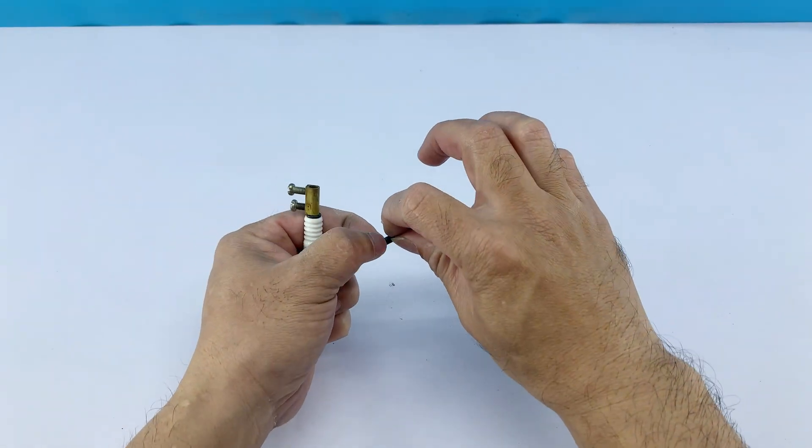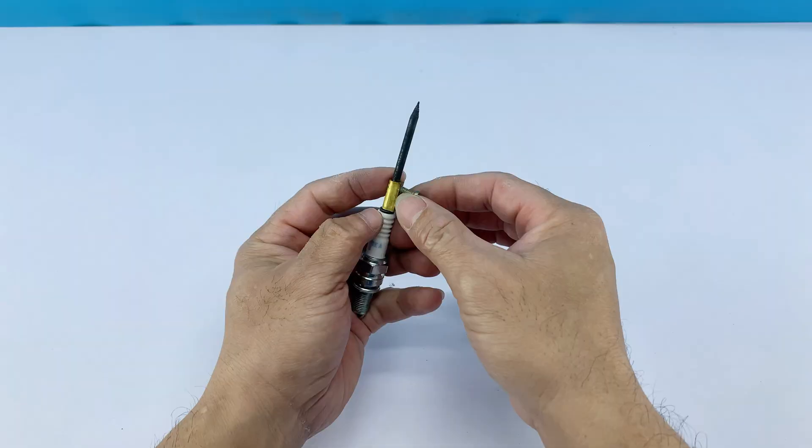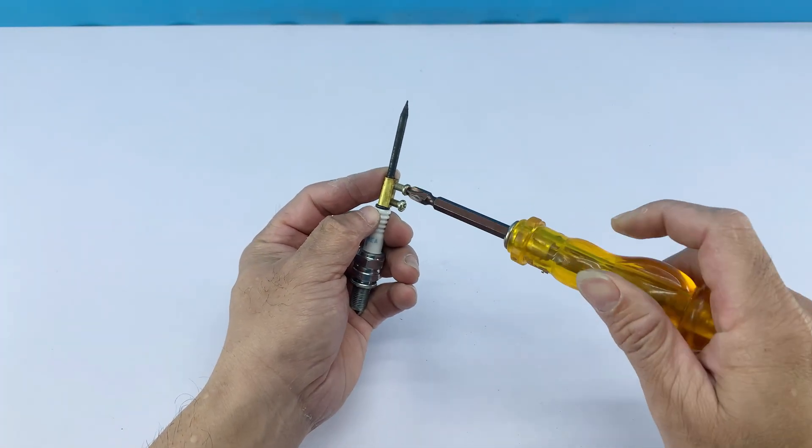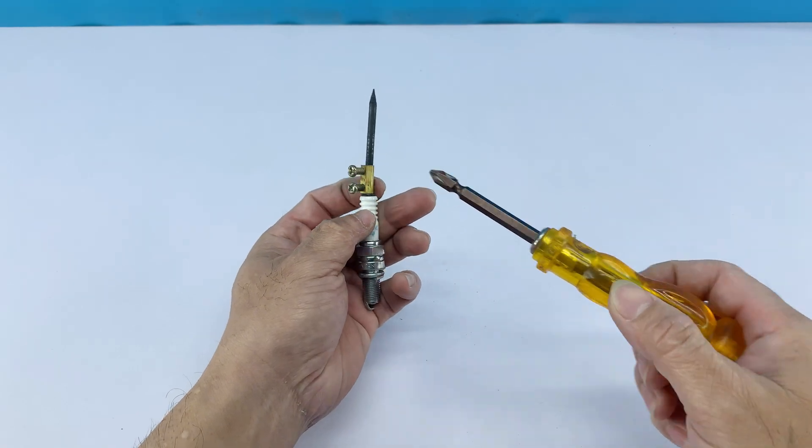Now, I simply insert the sharpened carbon rod into the brass terminal on our spark plug assembly. It fits snugly, ensuring excellent electrical contact and efficient heat transfer.